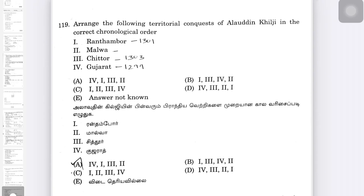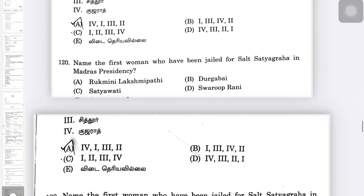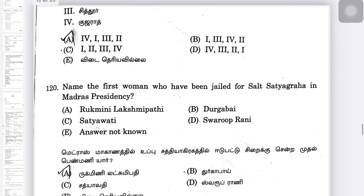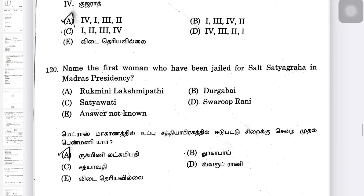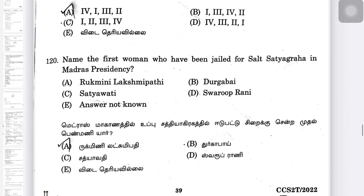Alauddin Khilji — the order to grab meals. First, Gujarat. In 1299, as a city, Sithour, then Malwa. Medras Medras — Sirek Center.